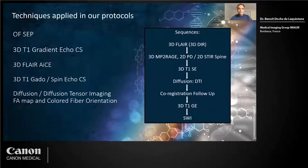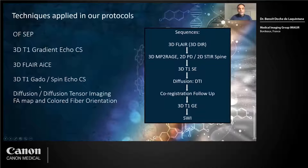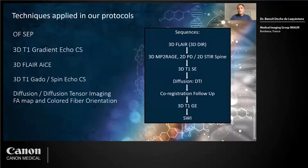The technique applied in the protocols: I use the French observatory protocol of multiple sclerosis with 3D T1 gradient echo with CS acceleration technique, the 3D FLAIR with ACE for better resolution, the 3D T1 post-gadolinium in spin echo with CS. I use also diffusion tensor imaging with the use of advanced maps like FA and colored fiber orientation. My approach covers sequences with 3D FLAIR and 3D DIR for hypersignal, 3D MP2R, 2D PD and 2D STIR for the hypersignal in the spine, and 3D T1 spin echo for the gadolinium enhancement.